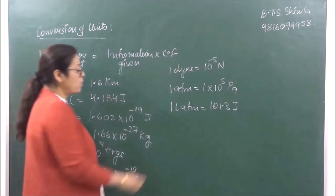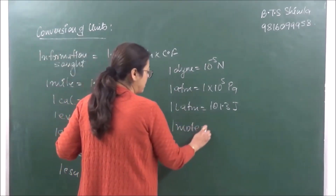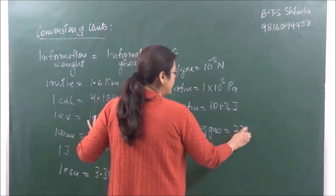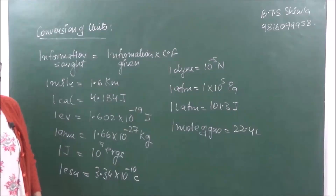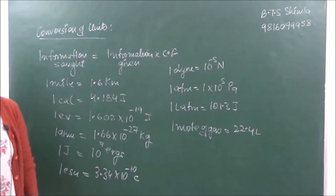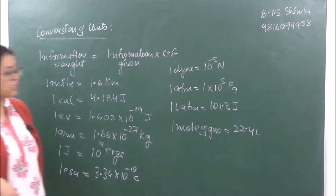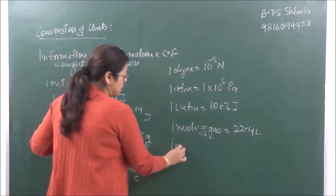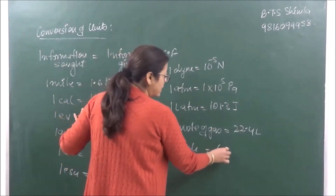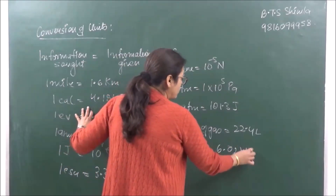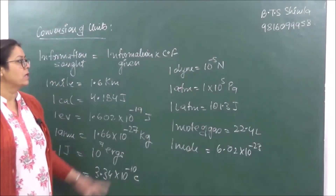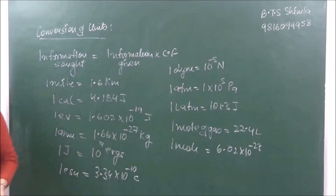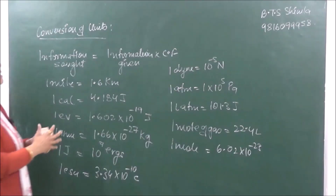You should also know that one mole of a gas is equal to 22.4 liters at STP. And one mole of a substance is equal to Avogadro's number, which is 6.02 × 10²³. So these are the conversions which you require — questions in physics and chemistry can come in this manner.